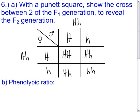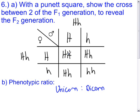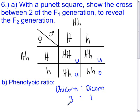For the phenotypic ratio, the only two phenotypes are unicorn and dicorn. State the phenotypes in the ratio — unicorn to dicorn. Homozygous dominant (HH) is a unicorn; heterozygous (Hh) takes after the dominant trait and is also a unicorn. Homozygous recessive (hh) is a dicorn. So the phenotypic ratio is 3 unicorns to 1 dicorn.